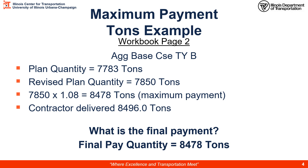Workbook page 2: a maximum payment example in tons for aggregate base course type B. We had a plan quantity of 7,783 tons and a revised plan quantity of 7,850 tons — a more accurate number than what the designer gave us for bidding. To calculate maximum payment, we take our most accurate theoretical quantity of 7,850 tons times the max pay percentage for that item. Looking on page A15 for aggregate base course type B, the maximum payment is 108%, or 1.08 as a decimal, giving us a maximum payable amount of 8,478 tons.